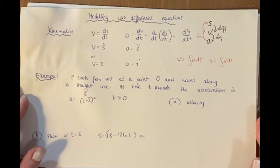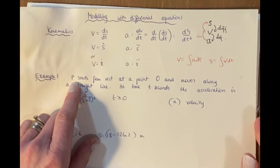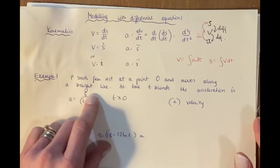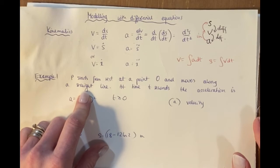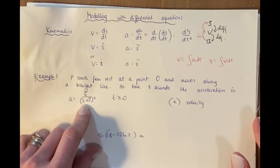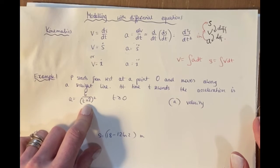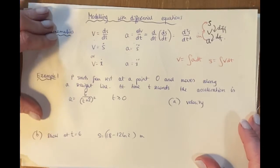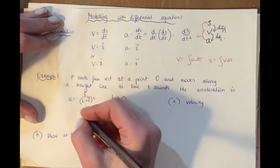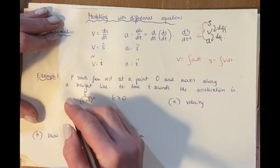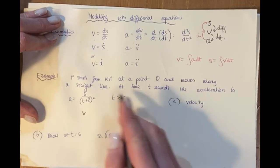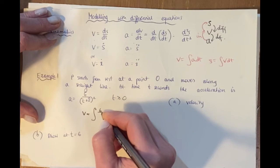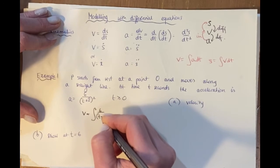Let's start example 1. A particle P starts from rest at a point O and moves along a straight line. At time t seconds, the acceleration is a = 6/(t+2)². We have to find velocity. Since acceleration is the derivative of velocity, velocity is the integral of acceleration.